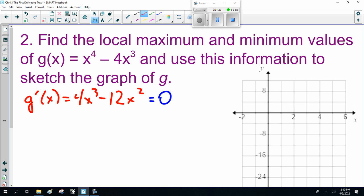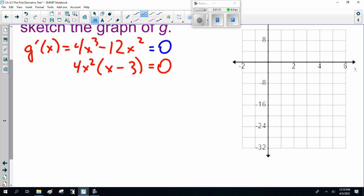I'm going to factor it: 4x squared times x minus 3. So if I factor it, then it's either x equals 0 or x equals 3. So I have two points I have to check, 0 and 3.